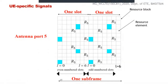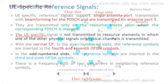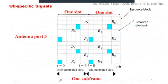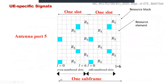For even-numbered slots, the UE-specific reference signals are transmitted in the fourth and seventh OFDM symbol. For odd-numbered slots, they are in the third and sixth OFDM symbols. Note that OFDM symbol numbering starts from L=0, so the seventh symbol corresponds to index 6, since the symbols run from 0 to 6 (seven total symbols per slot).